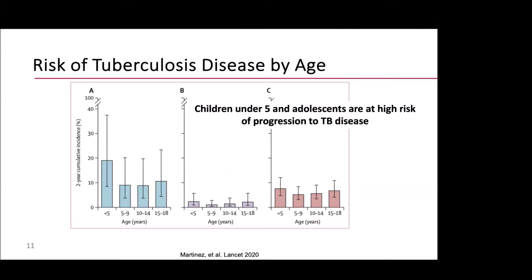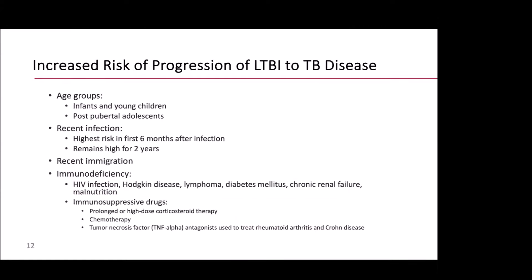Children less than five who are infected with TB have about a 20% risk of progression to disease. For young children less than two, that includes disseminated TB — meaning miliary TB or TB meningitis — which is associated with higher morbidity and mortality. There is still a risk for children who do not test positive for LTBI by either TST or IGRA, and the overall risk is just under 10% for all children, irrespective of their TB infection status.